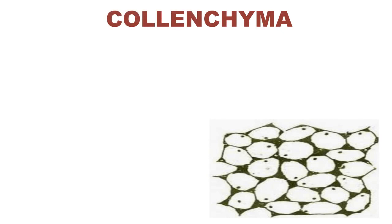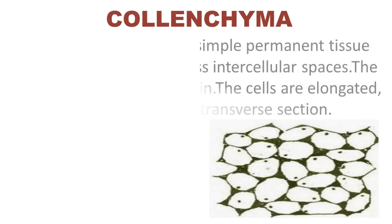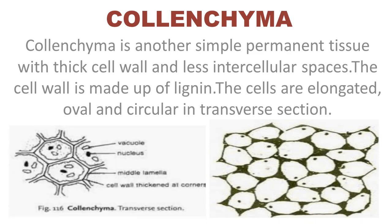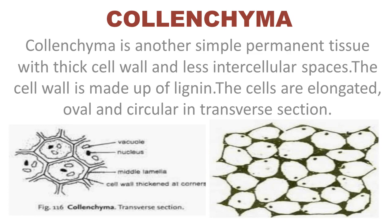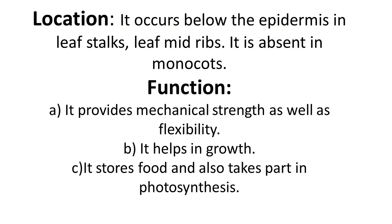The next important tissue is collenchyma. Unlike parenchyma, collenchyma cells are not loosely arranged — they have a thick cell wall and less intercellular spaces. Wherever the cells join they form thick corners, and the cells may be elongated, oval, or circular due to deposition of lignin. Collenchyma occurs below the epidermis in the leaf stalk and leaf midrib. Its functions are to provide mechanical strength and flexibility, help in growth, store food, and take part in photosynthesis.